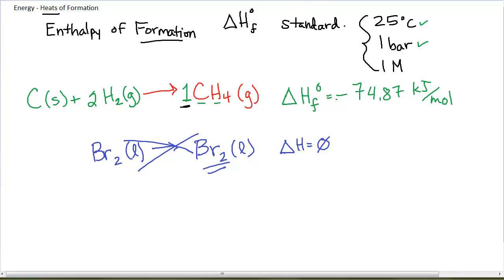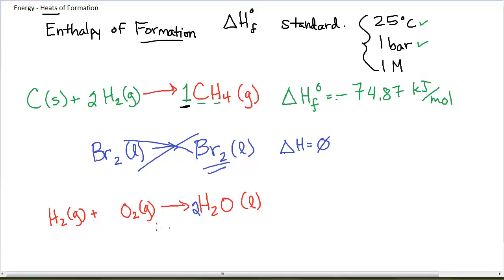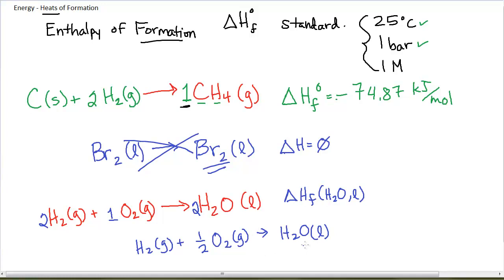Let's write the enthalpy of formation of liquid water. The elements that make up water are hydrogen, which is diatomic gas (H2), and oxygen, which is diatomic gas (O2). If we balance it the normal way we get 2H2 + O2 → 2H2O, but that reaction has two products. For a formation reaction, we must have exactly one product, so we divide everything by two and allow fractions: H2 + ½O2 → H2O liquid.